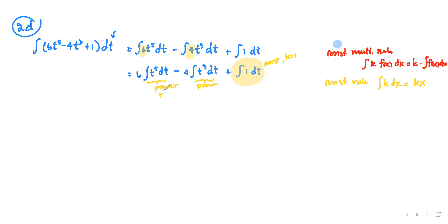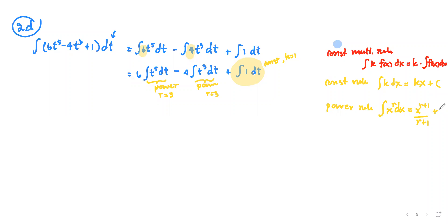The power for the first term is 5 and the second term is 3. The power rule states that the integral of x to the power r with respect to x is x to the r plus 1, divided by r plus 1. Don't forget to add the constant of integration.